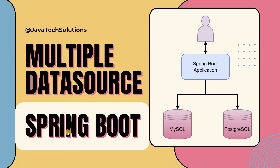Hello everyone. Today I am going to discuss multiple data sources in Spring Boot applications. Whenever we develop any Spring Boot application we use some databases for fetching or storing data. That is fine if we are using a single database like Oracle, MySQL, PostgreSQL, or a NoSQL database. But if there is a need to fetch or save data into multiple databases from one microservice or one Spring Boot application, how do we achieve that?